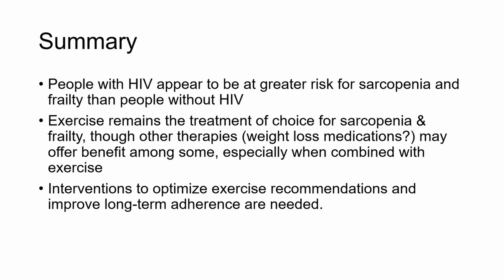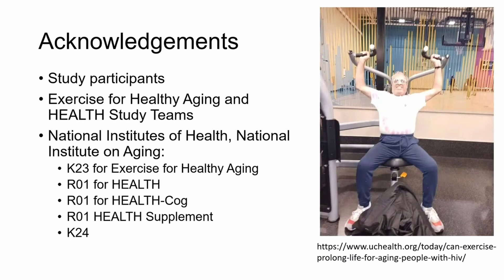In summary, people with HIV appear to be at greater risk for sarcopenia and frailty than people without HIV. Exercise remains the treatment of choice for sarcopenia and frailty, although other therapies may offer benefit. Interventions to optimize exercise recommendations and improve long-term adherence are needed. I wanted to acknowledge our study participants — including one featured in our UC Health newsletter who has volunteered for both of my studies and has lost 40 pounds. Thank you to our study teams, the National Institutes of Health for their funding, and thank you all for being here.